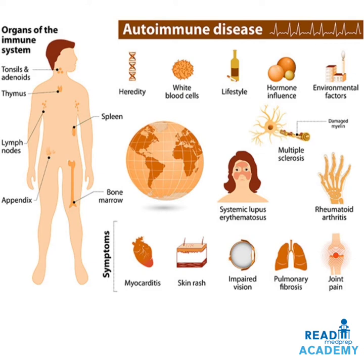The organs of the immune system include the primary lymphoid organs like the thymus and bone marrow, and secondary lymphoid organs like the tonsils, adenoids, lymph nodes, appendix, and spleen. Autoimmune disease may be caused by hereditary factors, involvement of white blood cells, lifestyle changes, hormonal influences, or environmental factors. Examples include systemic lupus erythematosus, multiple sclerosis, and rheumatoid arthritis. Symptoms include myocarditis, skin rashes, impaired vision, pulmonary fibrosis, joint pains, and muscle pains.